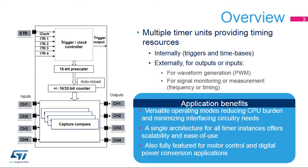This slide presents the output compare features. A compare event is generated when the counter matches the value of the compare register. This event can trigger an interrupt or a DMA request and can be reflected on the corresponding output pin by an output set, output reset, or output toggle. The compare register can be preloaded. The preload must be disabled if multiple compare values must be written during a counting period. Conversely, preload mode should be preferred for real-time constraint applications, since it gives a higher time margin for the software to update the compare register.